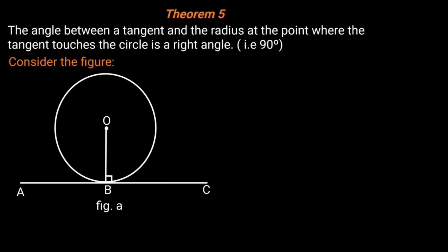Let's consider the figure below. In this figure, OB is a radius and ABC is a tangent. The angle at B where they meet is 90 degrees. Hence, angle OBC is equal to 90 degrees.